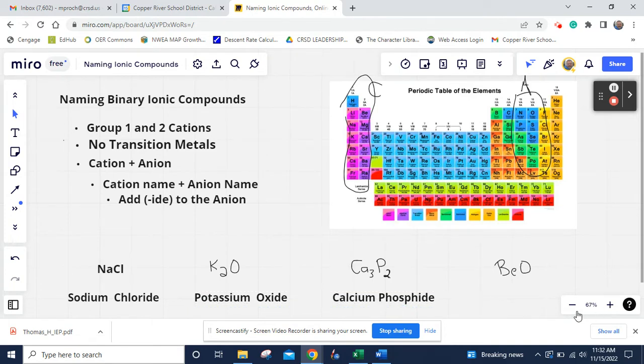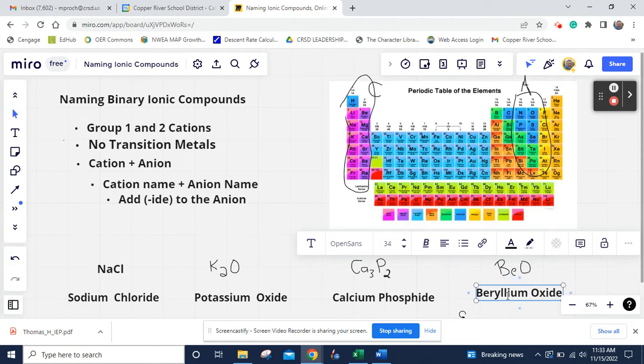We've got the last one now. And it's BeO. We know Be, if we look at it over here, is going to be right there. It's beryllium. And oxygen is oxide. That's the name of it.